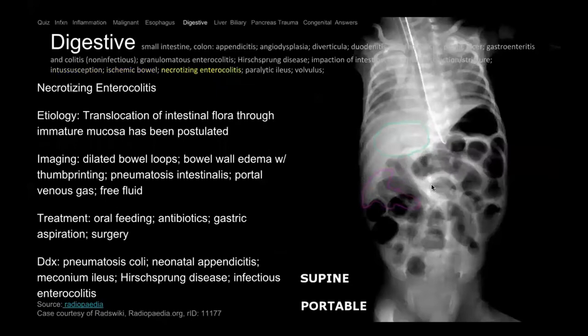Here's another example of ischemic bowel — the bowel wall is thickened and non-enhancing, dying from ischemia. This is because of an internal hernia — there's a mushroom-shape appearance herniating through a defect. The bowel is at least hemorrhagic if not dying — hypertense and not enhancing. In children, a similar dead bowel appearance is called necrotizing enterocolitis. They get air in the wall of the bowel — pneumatosis — and air tracks into the portal venous system. This occurs in premature children.